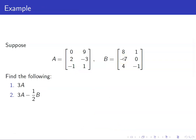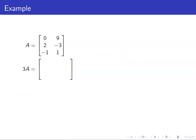Suppose we have these two matrices A and B. We want to find 3A and then 3A minus one half B. First let us find 3A. We just have to multiply all the entries of A by 3. Hence, we have 0, 27, 6, negative 9, negative 3, and 3.